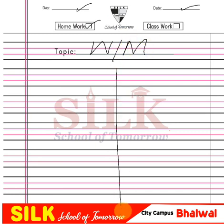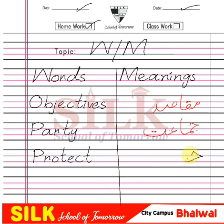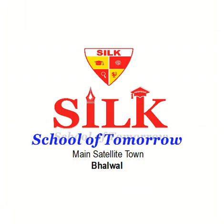Draw a margin line. On one side of the line write Words, and on the other side write Meanings. The first word is 'objective' — meaning maqasid. The second word is 'party' — meaning jama'at. The third word is 'protect' — meaning hifazat karna. Grade 4 has also studied this in Glass 3. The fourth word is 'rights' — meaning huqooq. Grade 4 students, you have to practice this in your notebooks.